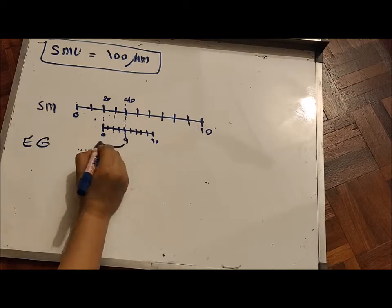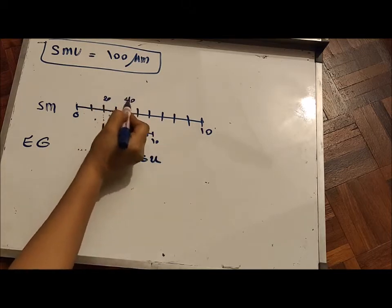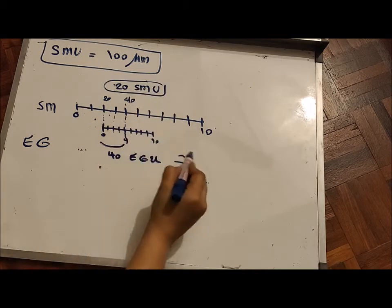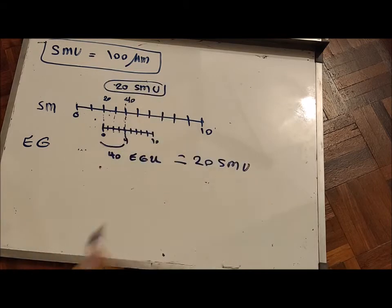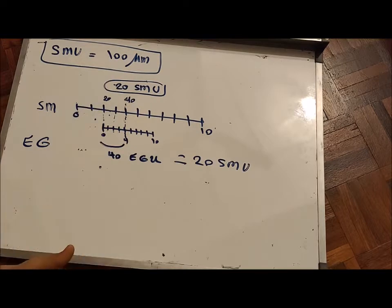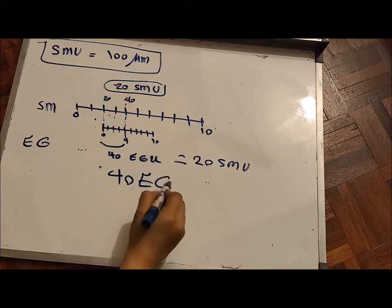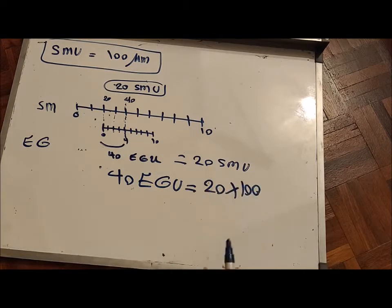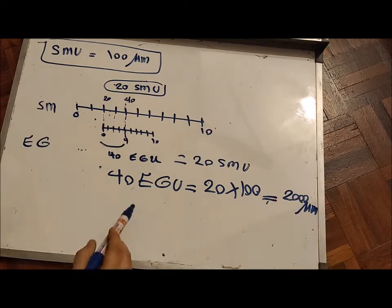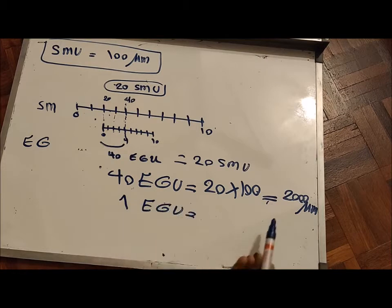So we say: 4 eyepiece graticule units equals 40 minus 20, which is 20 stage micrometer units. Each stage micrometer unit equals 100 micrometers, so 20 stage micrometer units equals 20 times 100, which is 2,000 micrometers. Therefore, 4 eyepiece graticule units equals 2,000 micrometers. Now I want to find what each one eyepiece graticule unit equals in micrometers.